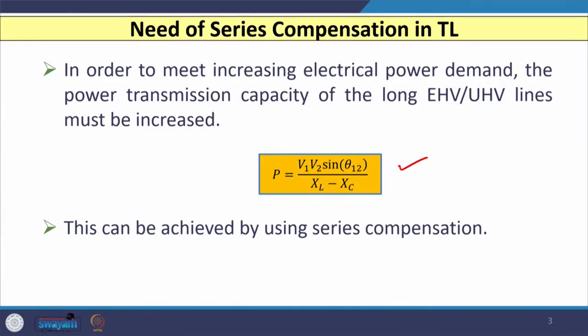We know that in order to meet increasing electrical power demand, the power transmission capacity of long transmission lines needs to be increased. This power to be transmitted is governed by the equation: active power P equals V1 times V2 times sin(θ₁₂), divided by the reactance XL of the transmission line. When no series capacitor is connected, the line is uncompensated and XL is fixed, so power depends mainly on the sending and receiving end voltages and the angle between them.